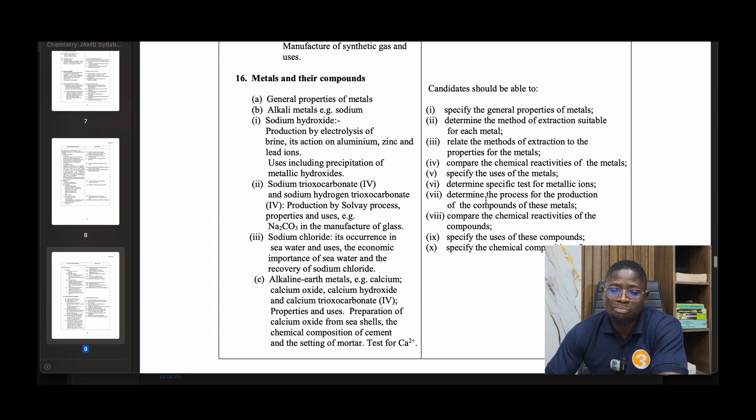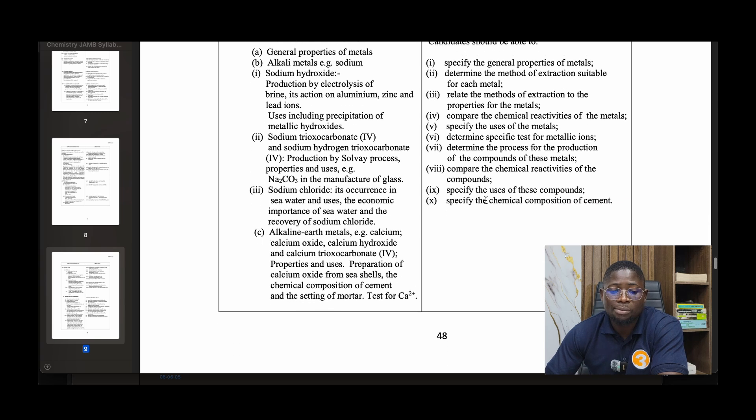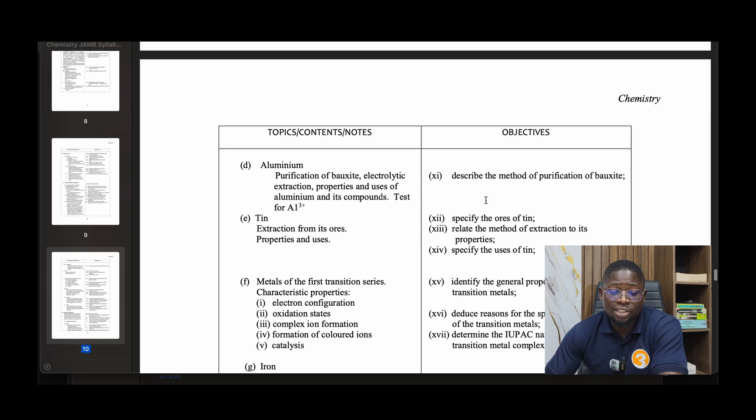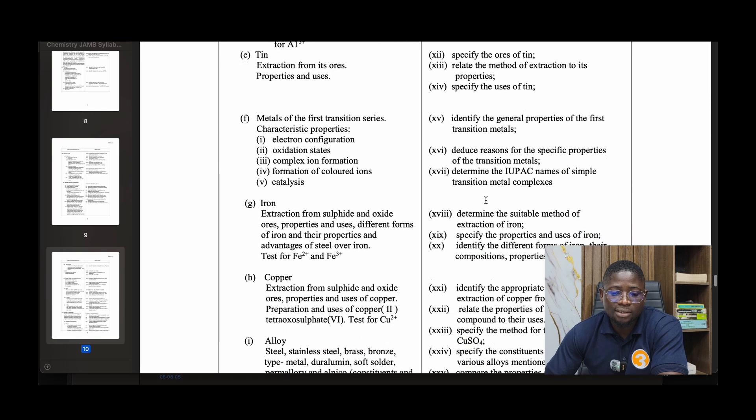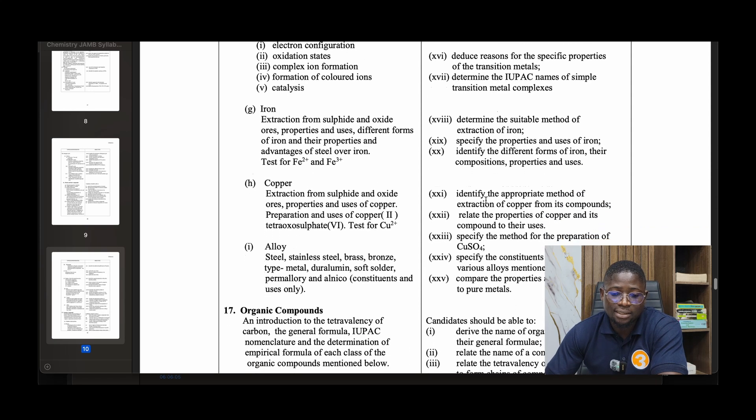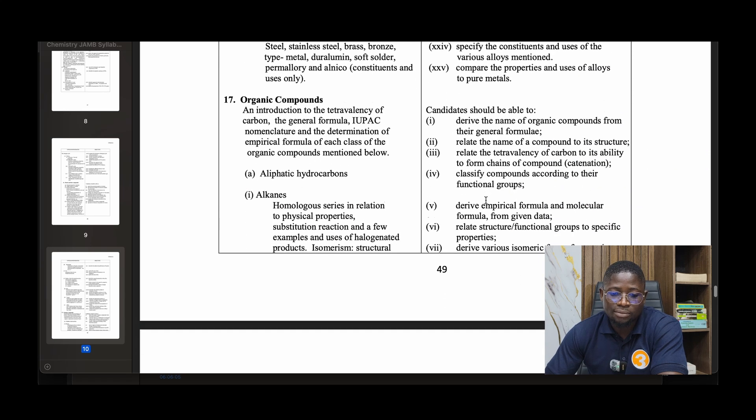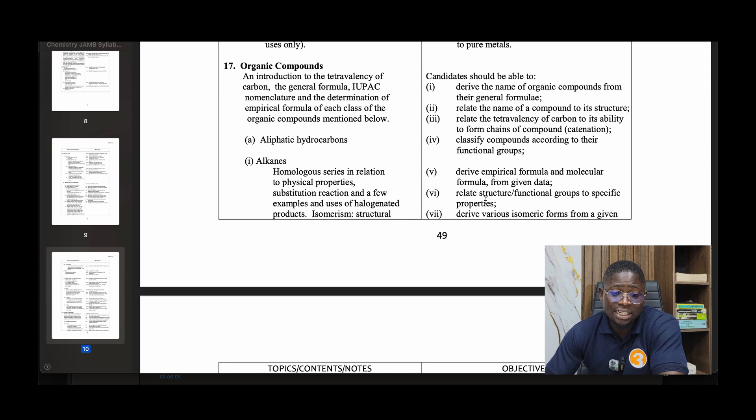Carbon, carbon(IV) oxide, carbon monoxide, coal, and coke. Number seventeen: Metals and their compounds. General properties of metals, alkali metals - sodium hydroxide, sodium trioxocarbonate, sodium chloride. Alkaline earth metals, then aluminum. The first transition series: characteristic electronic configuration, oxidation states, complex ion formation, formation of colored ions, and catalysis. We'll talk about iron and copper. Alloys.